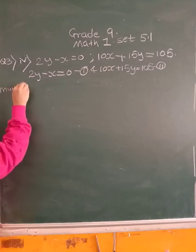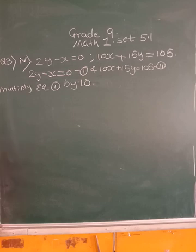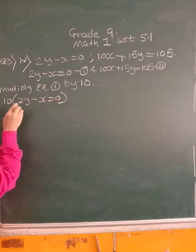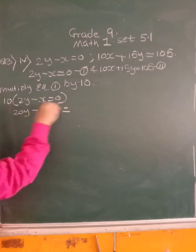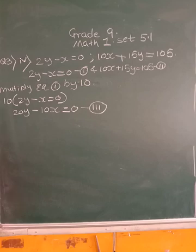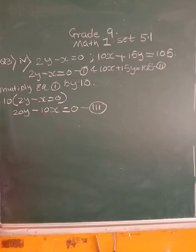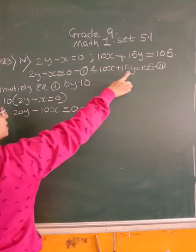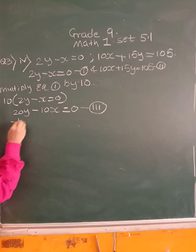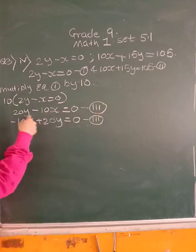So first you write 2y - x = 0. Let this be equation 1. Then, 10x + 15y = 105. Let this be equation 2. Now, multiply equation 1 by 10. Why are we doing this? So as to equalize the coefficients of x. So 10 and we are multiplying 2y - x = 0. So what will be your answer? 10 into 2 is 20y minus 10 into x is 10x is equal to 10 into 0 is 0. This will be now your equation 3.